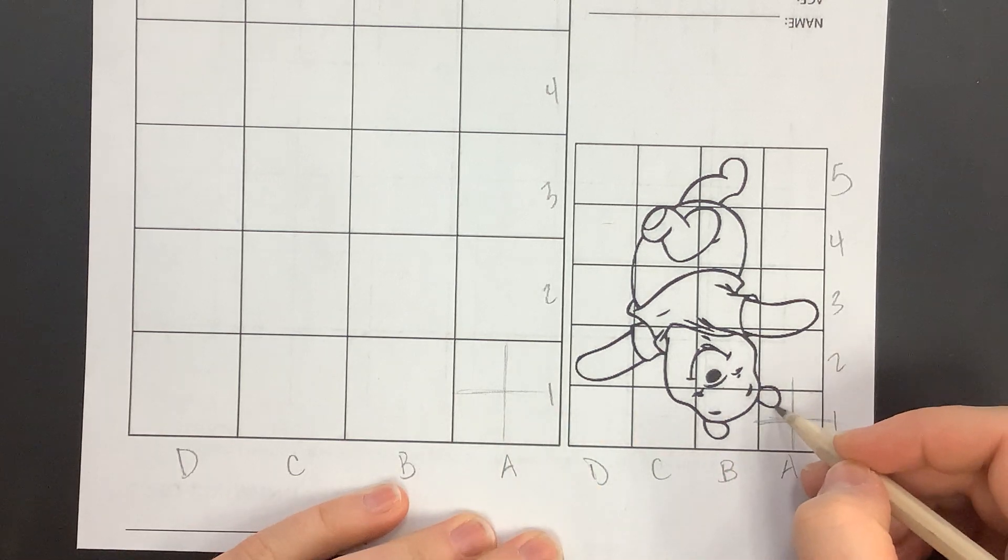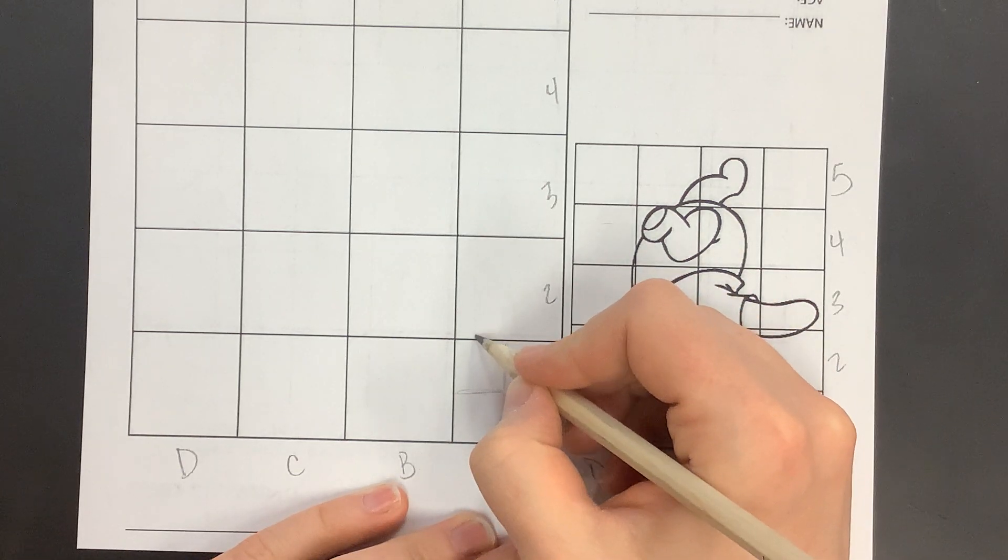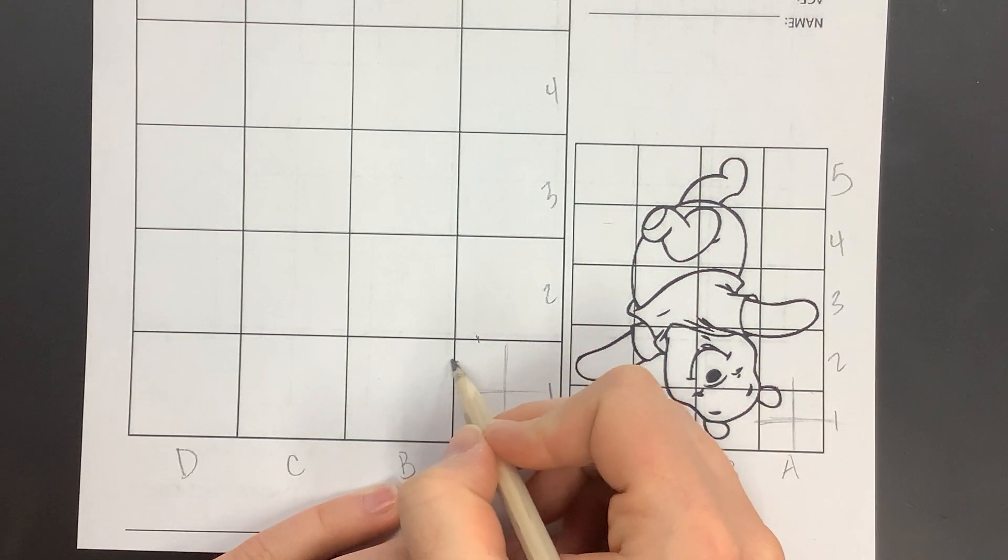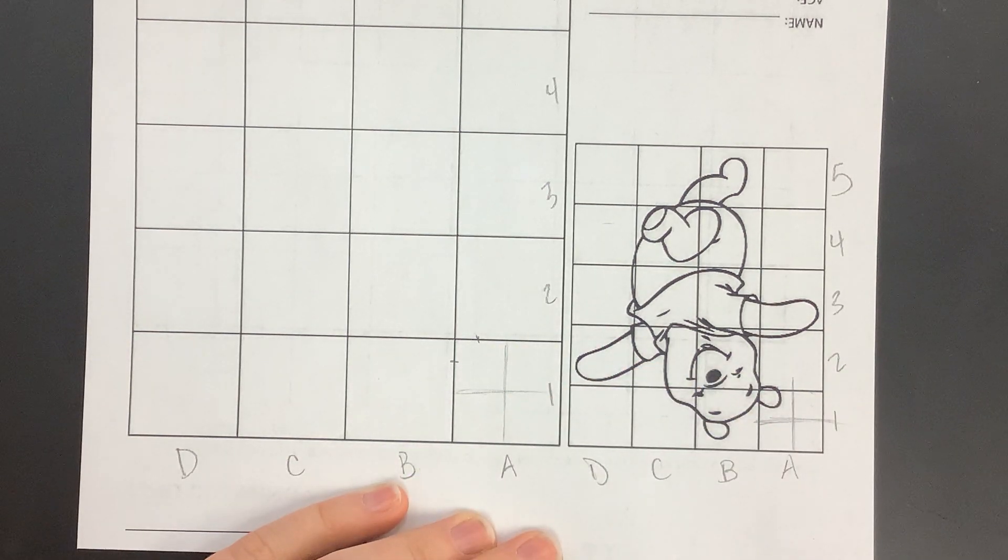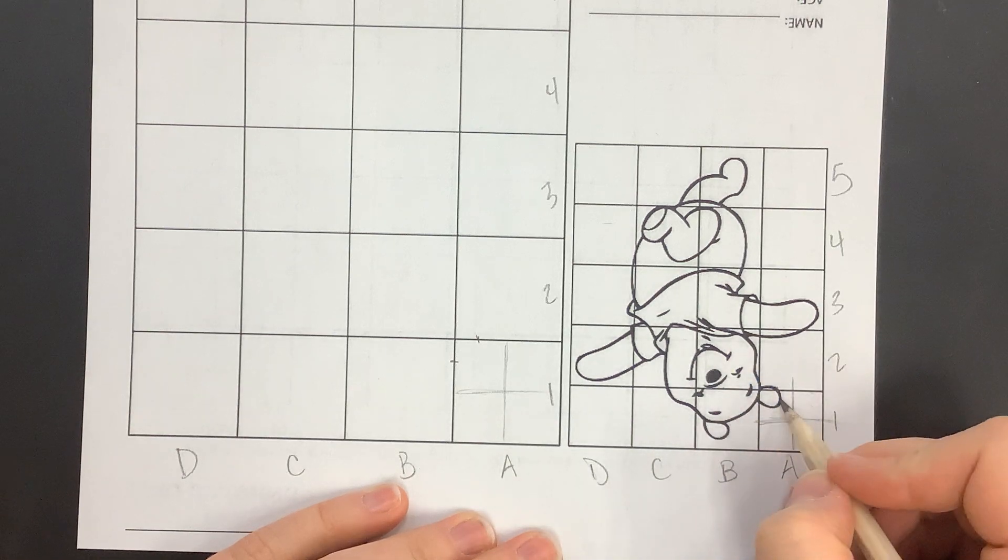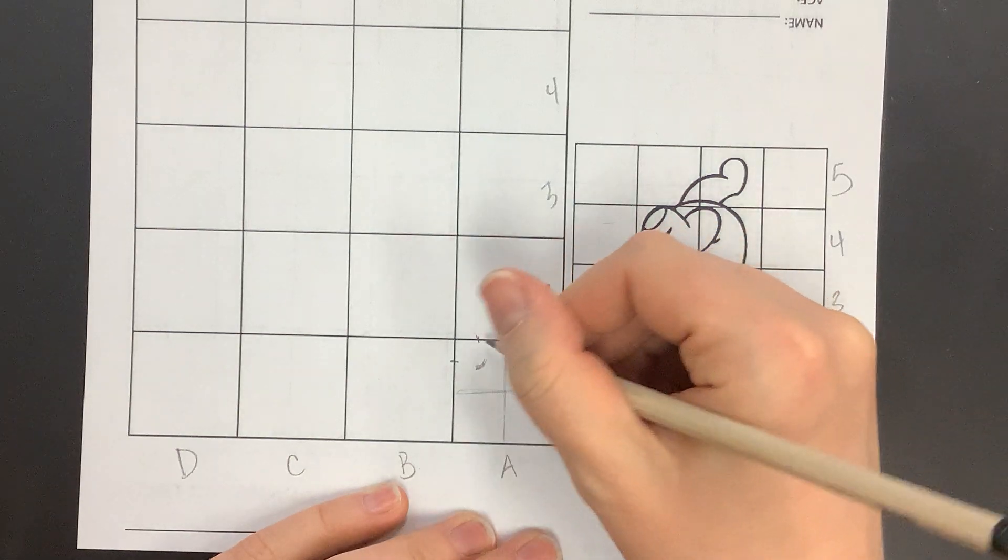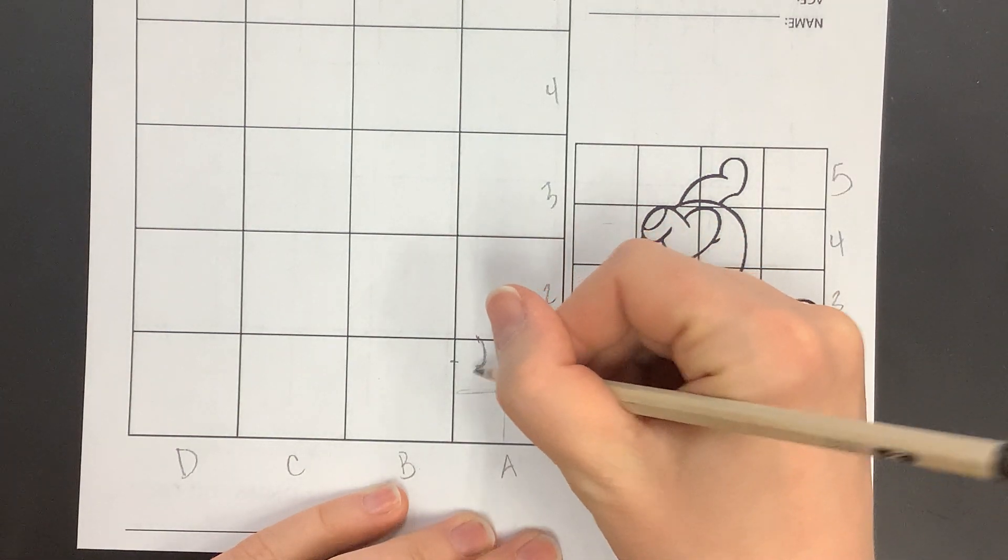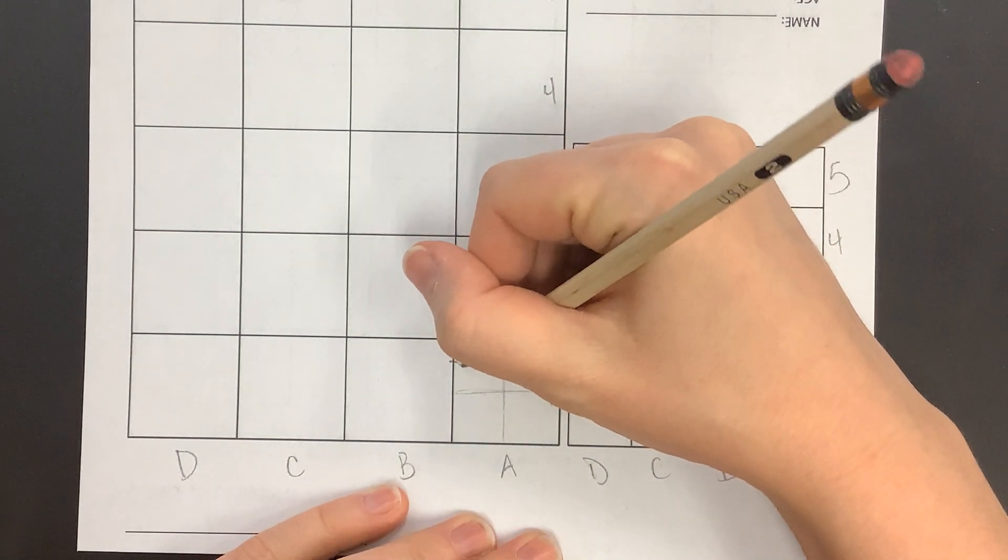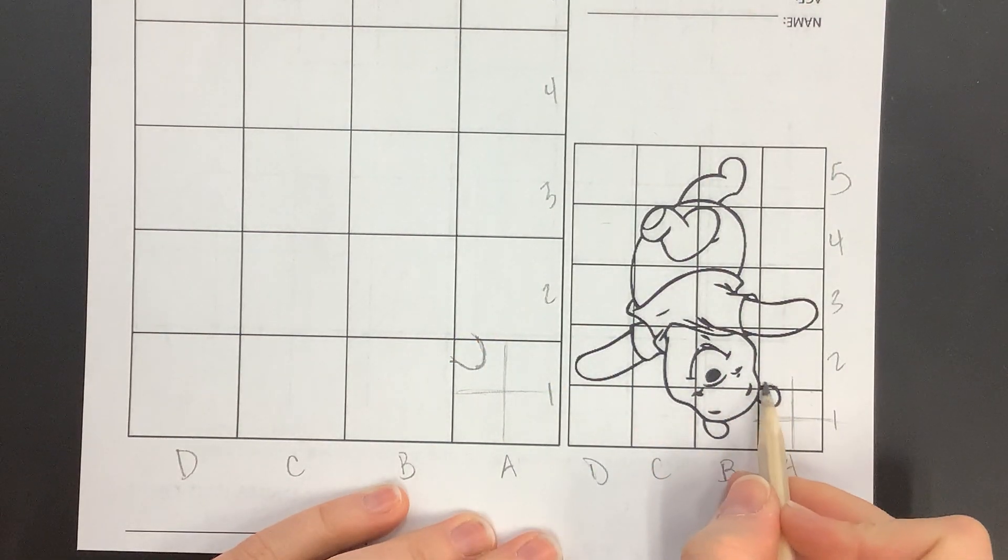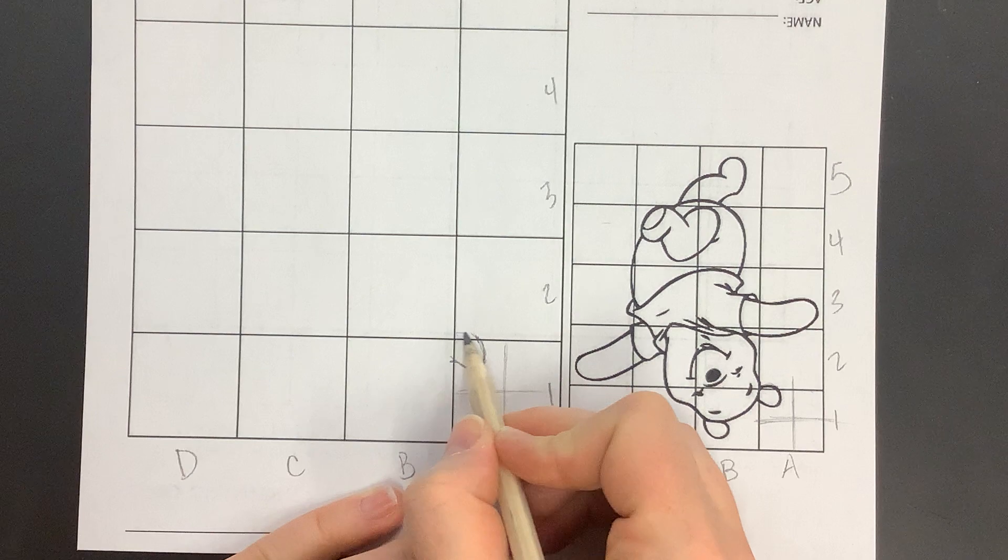I'm going to do the same thing here, cut it into fours. Then when I'm looking at this, I know that the ear is hitting somewhere right about there on the top. On the side it's somewhere right about in here that it's hitting my grid line, and then I can just see that that arch kind of comes out somewhere about there, and now I'm going to draw what I see.